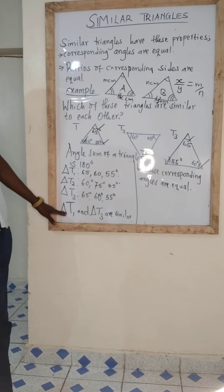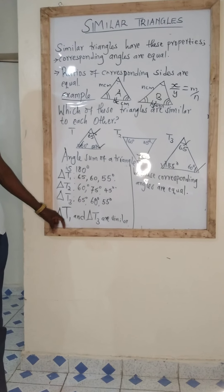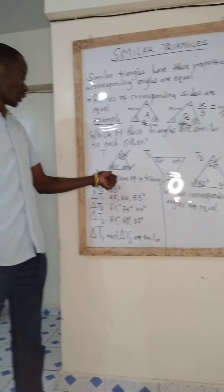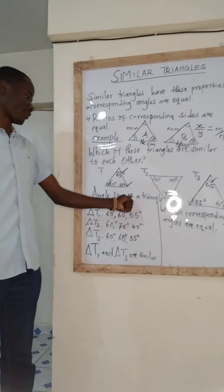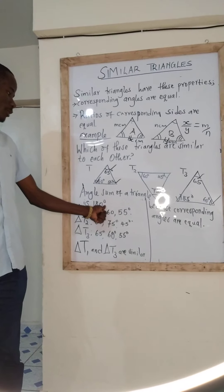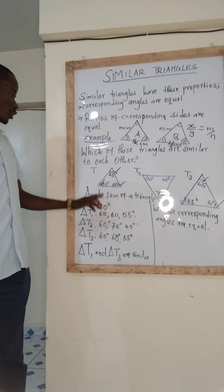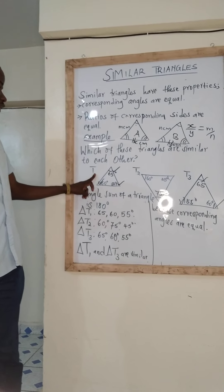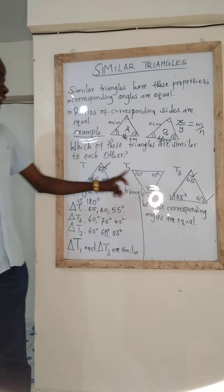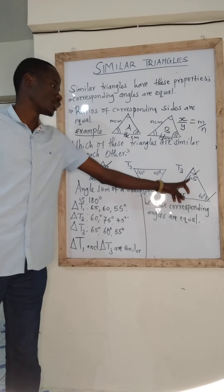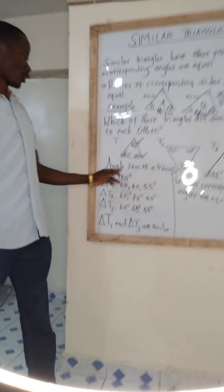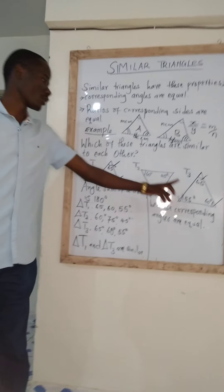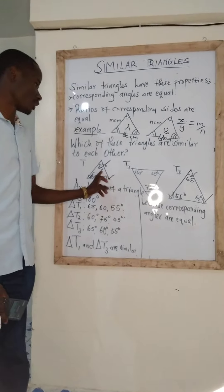So that is it — that is the property that we shall use. The angle sum of a triangle adds up to 180 degrees. We use that to find missing angles, and then verify that corresponding angles are equal to conclude that two triangles are similar.